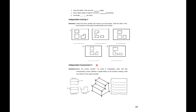For Independent Activity 3, skip this activity and proceed to Independent Assessment 3. For the direction, match the corners numbered one to five found in the orthographic views with their corresponding corners labeled in capital letters in the isometric drawing. Write your answer on the space provided. For example, for number one at this corner, identify what letter it corresponds to in the front view.